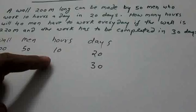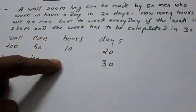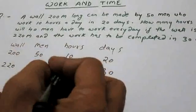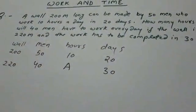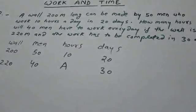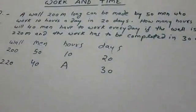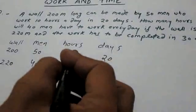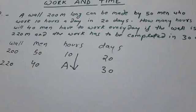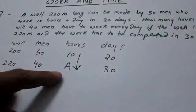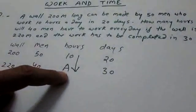For condition 2: there are 40 men, the wall is 220 meters long, and we have 30 days. The unknown we have to find is the hours — how many hours will they have to work every day. Let's take it as 'a'. This is called the arrow method.